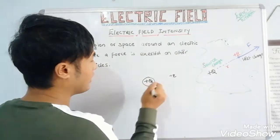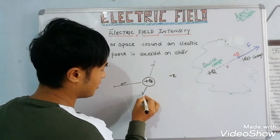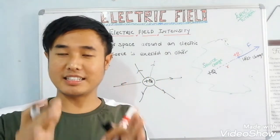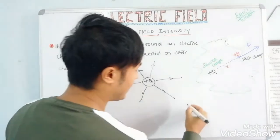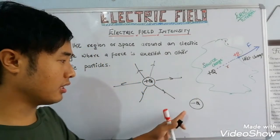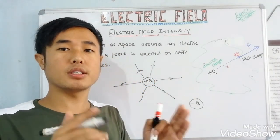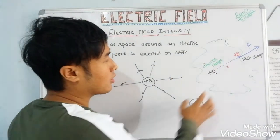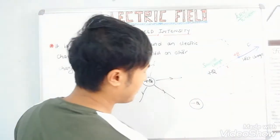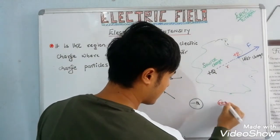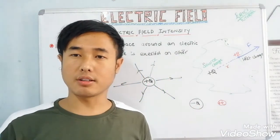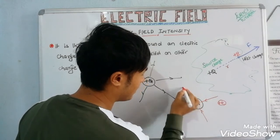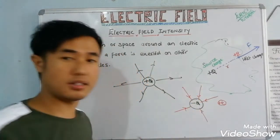That direction is the direction of the electric field — it points away from a positive source charge. Now, if we consider a negative source charge, the test charge is still positive. Since one is positive and one is negative, an attractive force is exerted. The force — and thus the electric field — points toward the negative source charge.